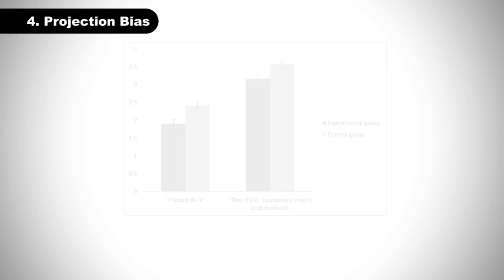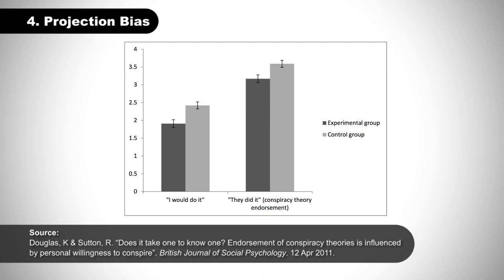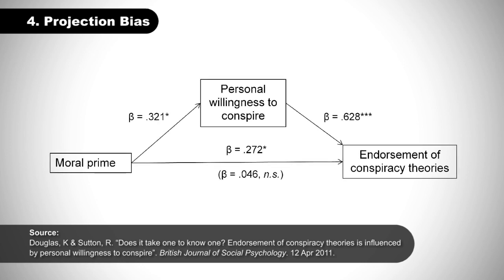And the projection bias refers to the tendency to think that others have similar beliefs or attitudes as we do. This might seem surprising, but it's found to be a common bias at play amongst conspiracy theorists. There has been found to be a strong connection between those who would conspire themselves and the endorsement in conspiracy theories. They conspired because I would conspire, is the basic mentality here.